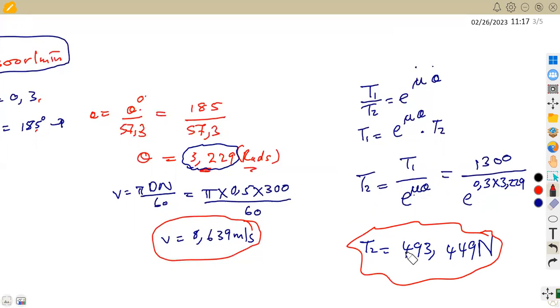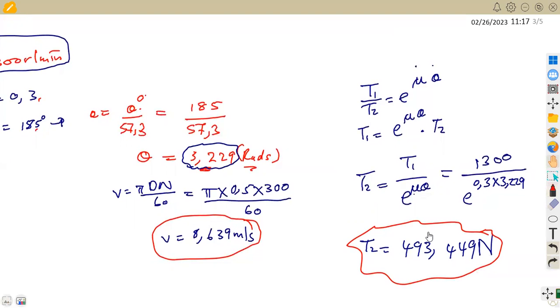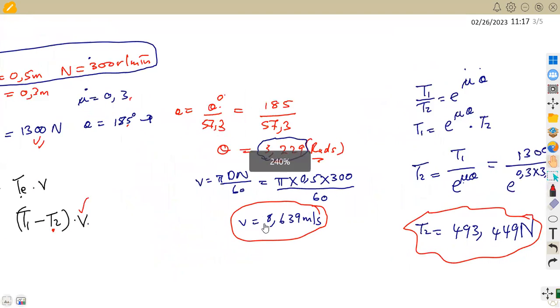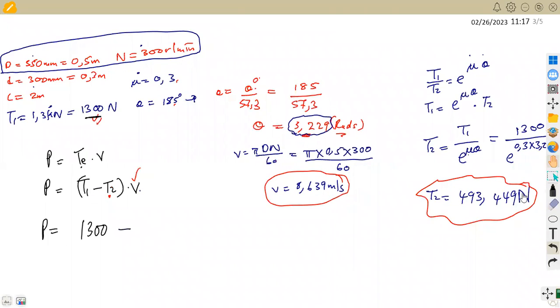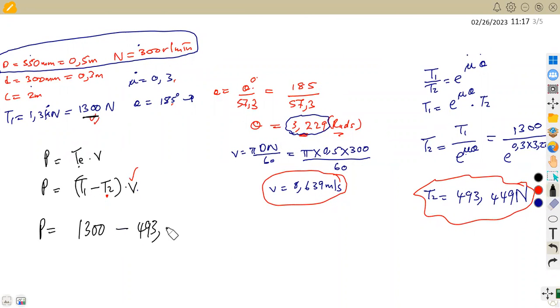So since we have our T2, we can now find the power. This was the missing part that we have from our formula now, T2, because we calculated V. So remember, from our formula, we said in this case that the total power is equivalent to T1 minus T2, of which T1 is 1300. So that's 1300 minus T2, which we obtained here as 493.449 times the velocity, in this case in meters per second, which is 8.639. So this can give us the power transmitted, which is going to be 6967.794 watts.